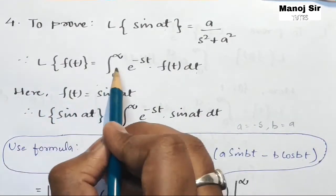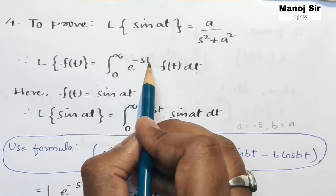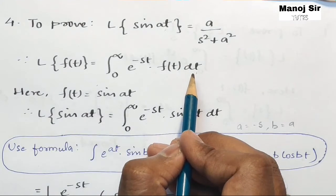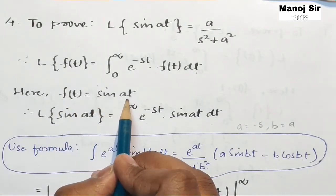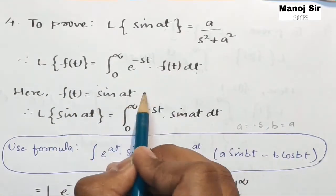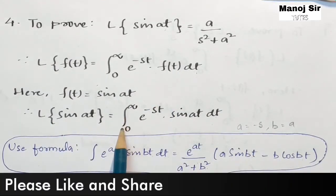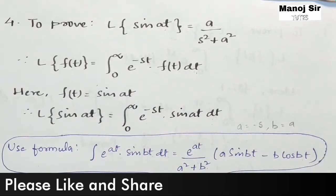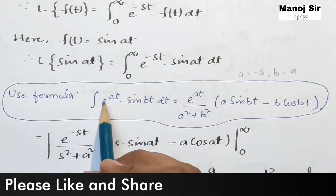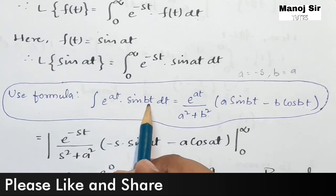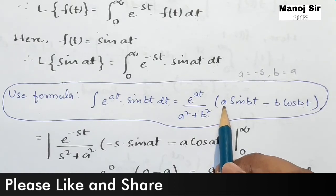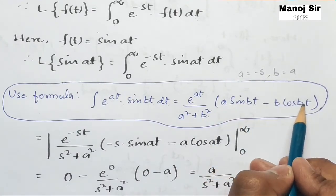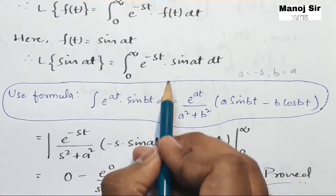By the definition of Laplace transform we have L{f(t)} = integration from zero to infinity of e to the power minus st into f(t) dt. Here f(t) is sin(at), so we can write f(t) equals sin(at). Therefore, L{sin(at)} equals integration from zero to infinity of e to the power minus st into sin(at) dt. Now we use a specific formula: the integration of e^(at) into sin(bt) dt equals e^(at) upon a² plus b² into [a·sin(bt) minus b·cos(bt)].